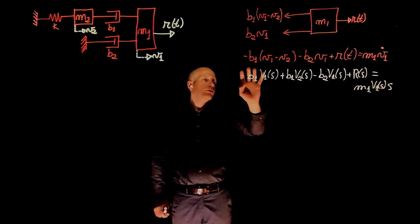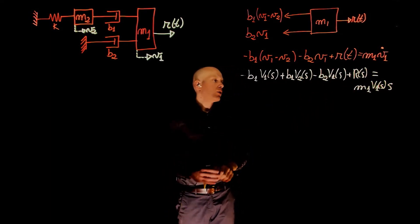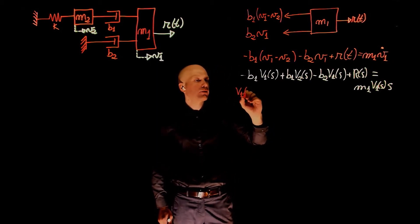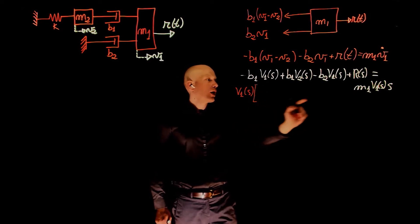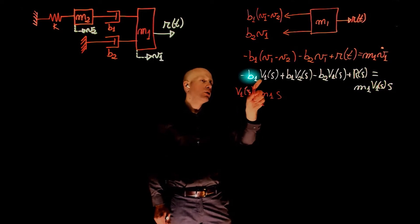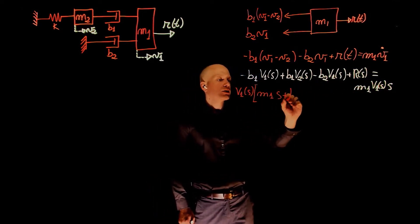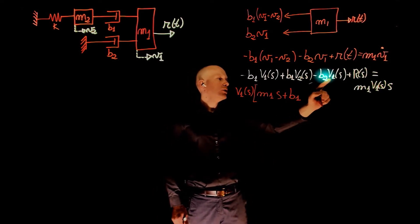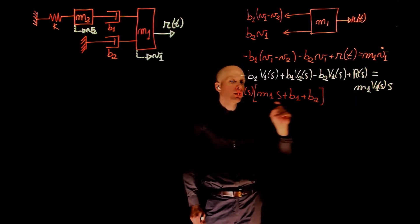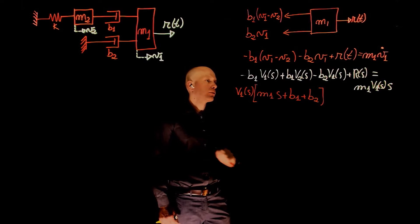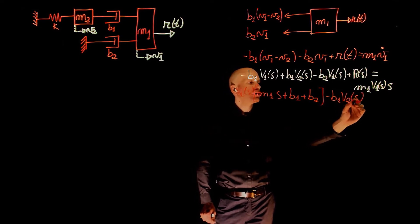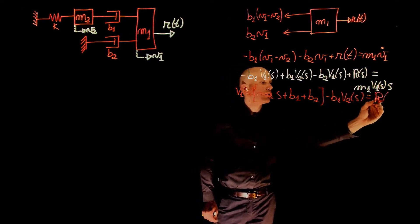We move all components except R(s) to the right side of the equation and factor all V1 terms. Factoring V1(s) gives: m1*s plus b1 plus b2, all multiplied by V1(s), minus b1*V2(s), equals R(s).